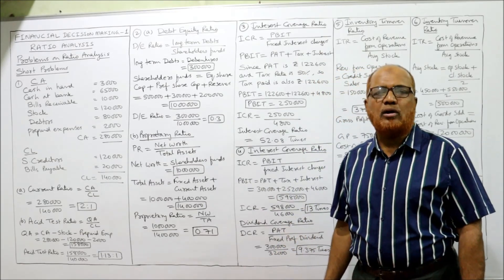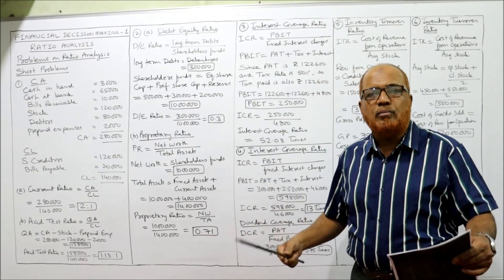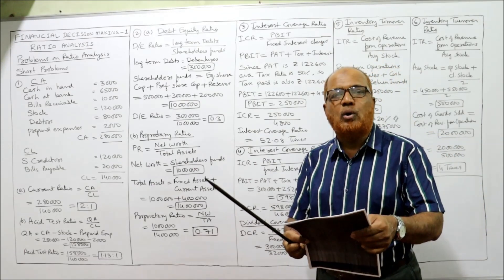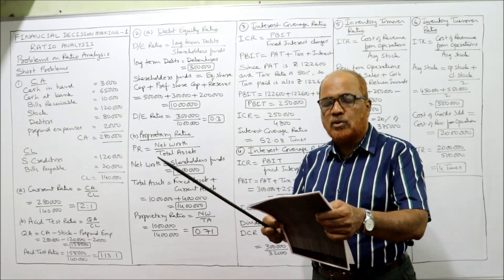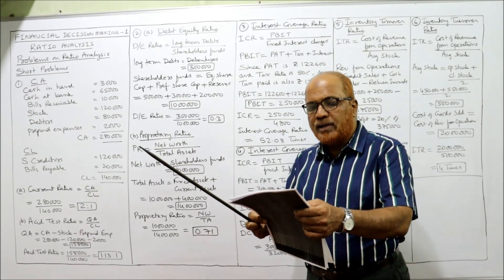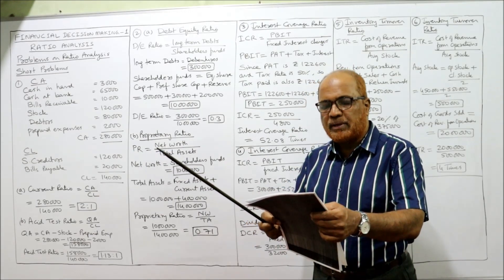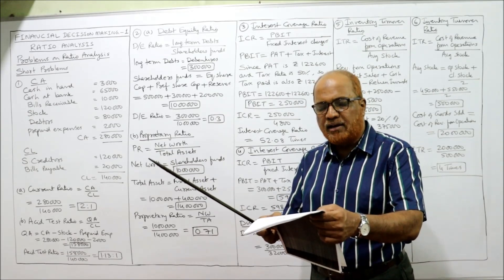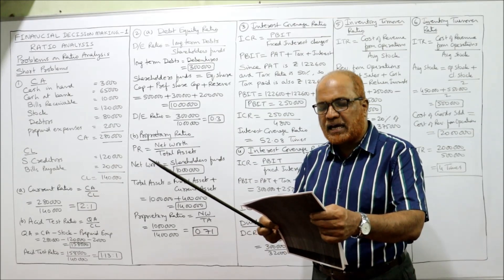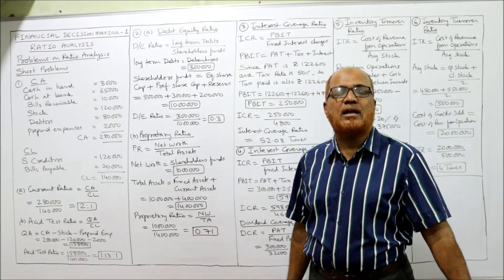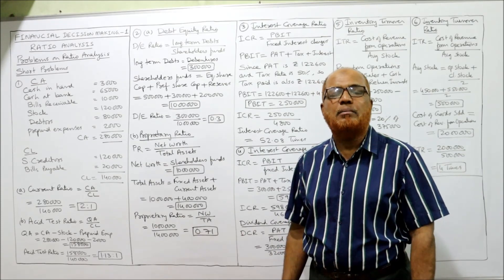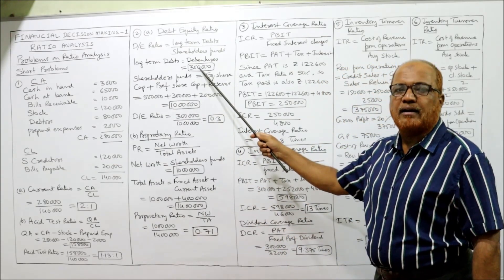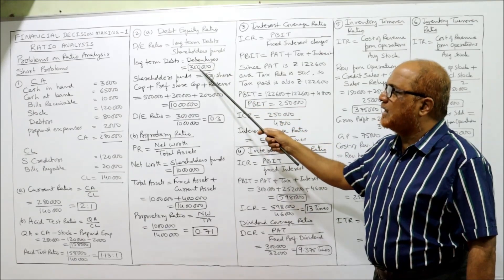What are long term debts? Long term loans or debentures. In our problem, we are not given loans but debentures. The information given: equity share capital 5 lakh, preference share capital 3 lakh, reserves 2 lakh, current liability 1 lakh, 8% debentures 3 lakh, fixed assets 10 lakh, and current assets 4 lakh. Only debentures are given as long term debt — 3 lakh.